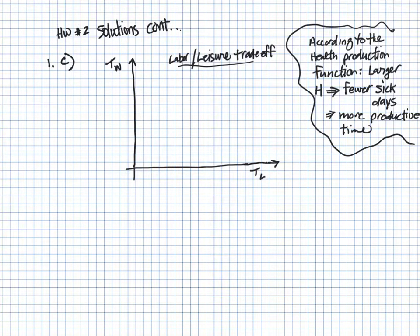The whole key to this problem is realizing that according to the health production function, more H means fewer sick days, and therefore more productive time available. So previously we showed that Bob had a larger H star, and so that's going to lead to Bob having fewer sick days and more productive time available. So what we should show here is a budget constraint for Frank that is closer to the origin. So we can show a downward-sloping relationship that shows the trade-off between time spent working and time spent in leisure, and let's call this Frank's budget. And since Bob has more H and more time available, he can engage in both more time spent working and in leisure. So let's call this Bob's budget.